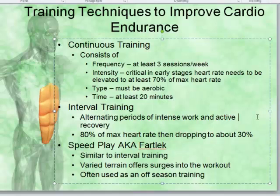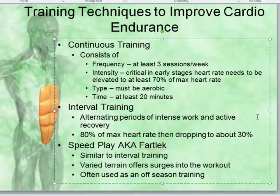Interval training alternates periods of intense work and active recovery. For example, you might go at 80% of maximum heart rate for 30 seconds, then drop to 30% for 30 seconds, back and forth. Then there's speed play — also called fartlek, a term from a German physicist or doctor — which is very similar to interval training with varied terrains and surges. It's a sprint-walk or sprint-jog pattern: very high intensity bursts followed by jogging at around 70% maximum heart rate.